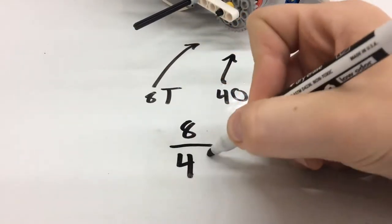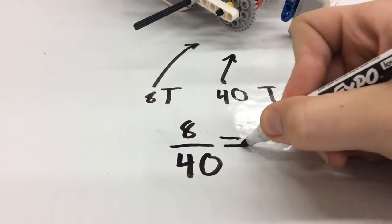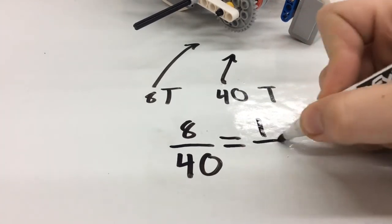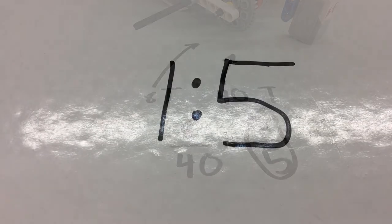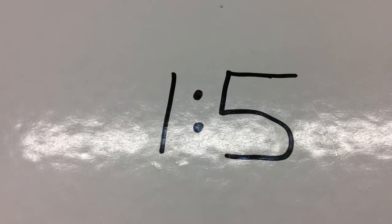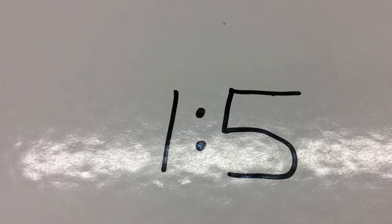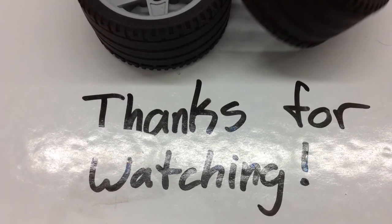So this is an 8 over 40 fraction, which is also one-fifth. So one-fifth is also equal to a one to five ratio, which means it's five times faster.